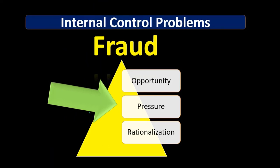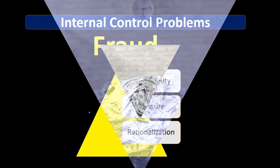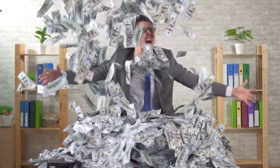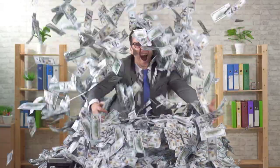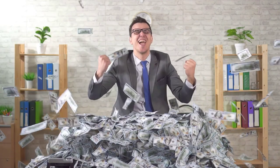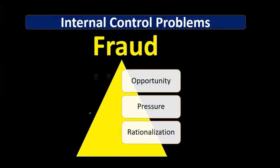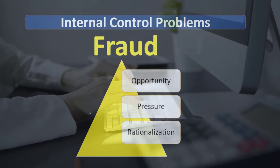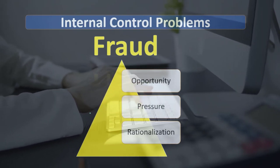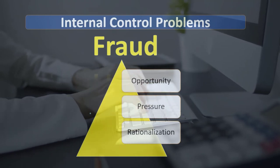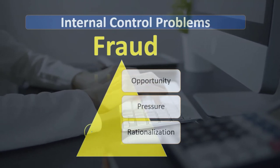Pressure — financial pressure being a huge component — means people under financial pressure are much more likely to commit fraud. Within our internal controls, it's hard to know what type of pressure all employees are under, but we can have a better understanding of our employees and know what types of pressure and problems are involved. Reducing that pressure will reduce the likelihood of fraud.